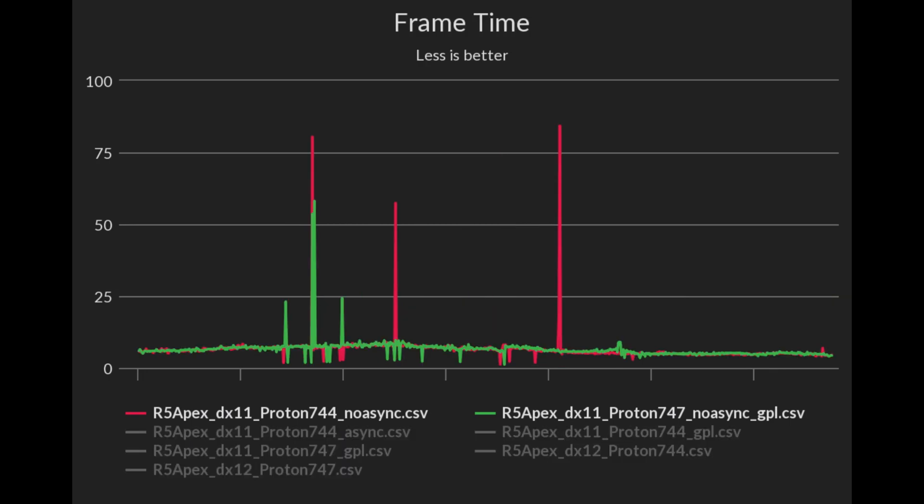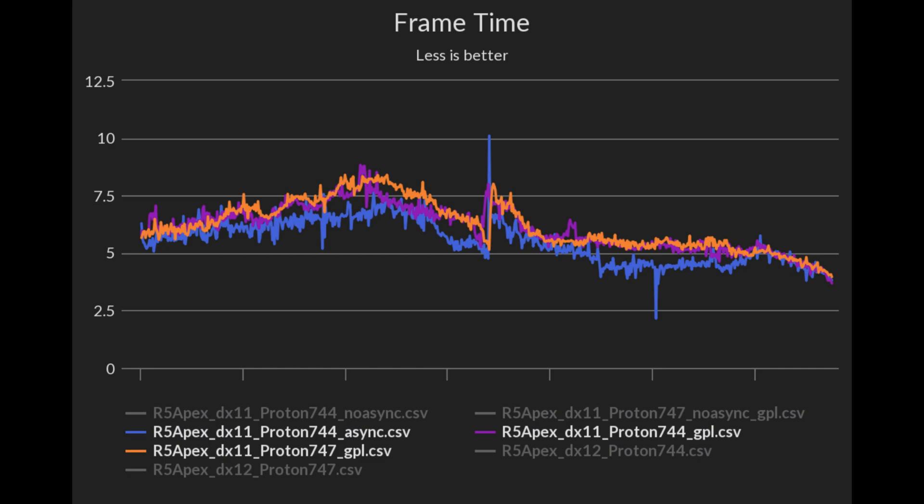Now moving on to the frame times — as we previously saw in the FPS benchmarks, both Protons without async or GPL enabled suffer from frame time spikes and dips. When you apply async or GPL, frame times are looking much better, with async once again beating GPL.